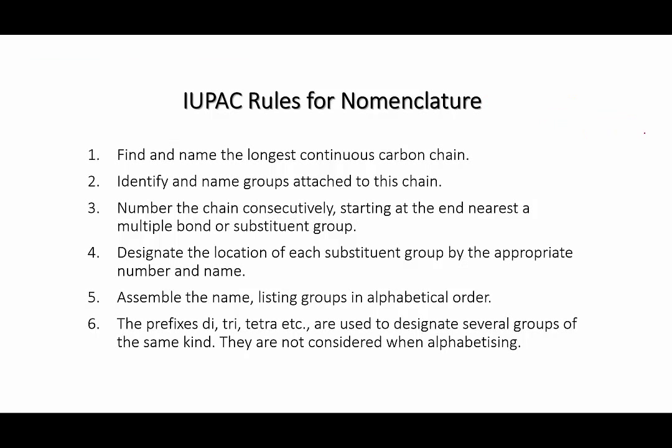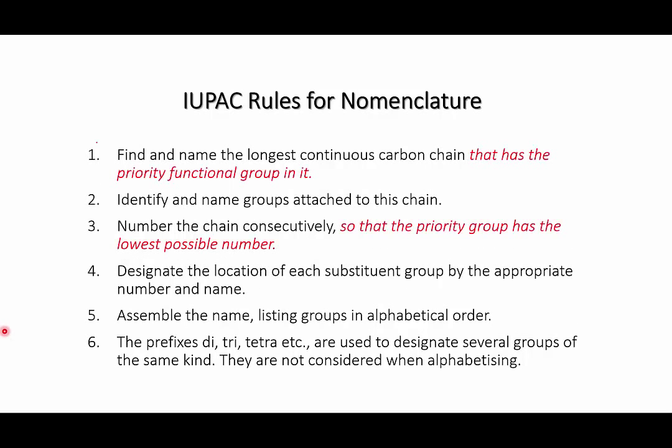So let's have another look at our naming rules. Now that we have this extra information about functional groups and their suffixes, we need to update our rules. There are two amendments that we need to make. First, when you find and name the longest carbon chain, it must have the functional group in it. This could mean that it isn't actually the longest possible carbon chain.